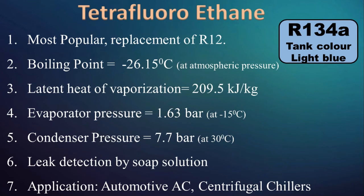R134A, Tetrafluoroethane, is the most popular refrigerant in AC and refrigerators. It is a replacement for R12 since it does not affect the ozone layer. It has a boiling point of minus 26.15 degree Celsius, with evaporator pressure of 1.63 bar and condensing pressure of 7.7 bar. Leak detection of R134A can be done by soap solution. Applications of R134A include automotive AC, centrifugal chillers, and many more.